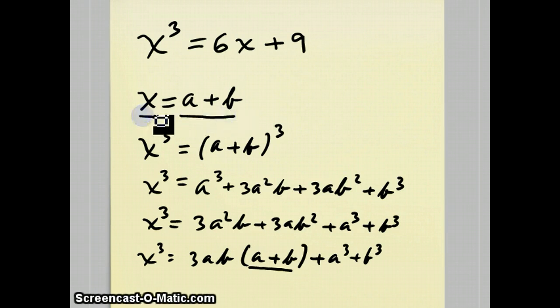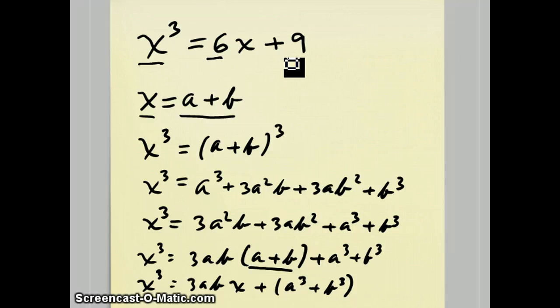So I can write this as x cubed equals 3abx plus a cubed plus b cubed. Notice how similar this bottom equation looks to the original equation where we have x cubed equals something x plus something.